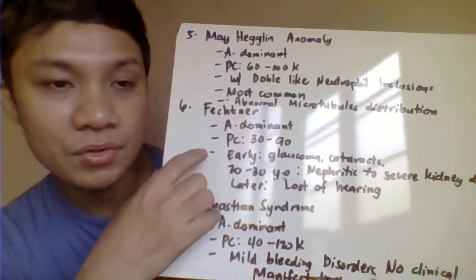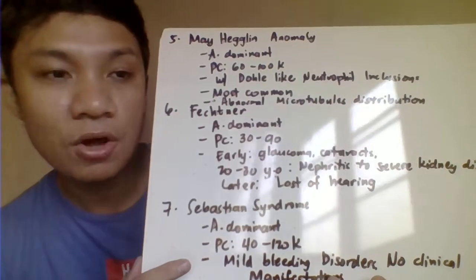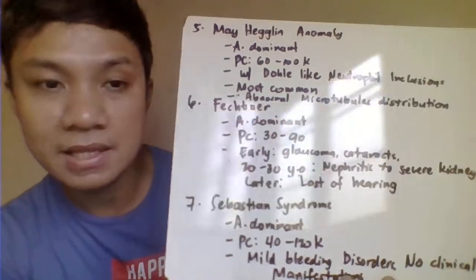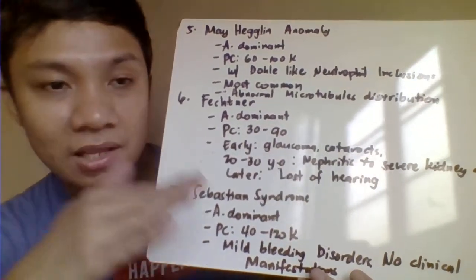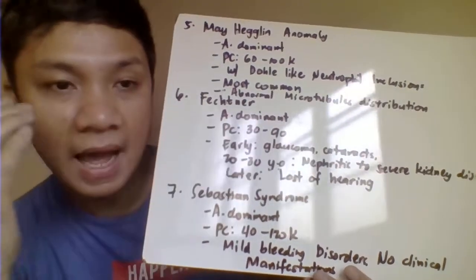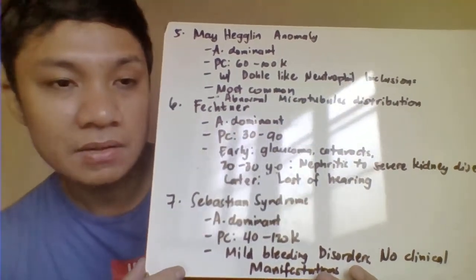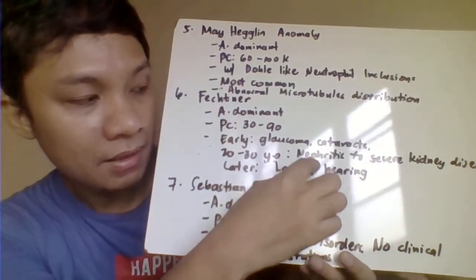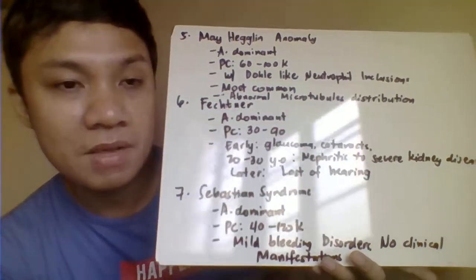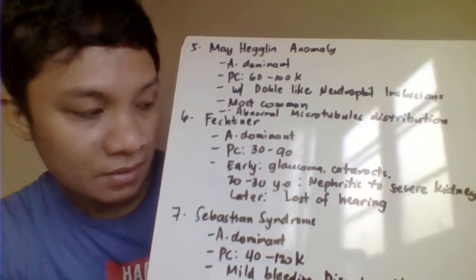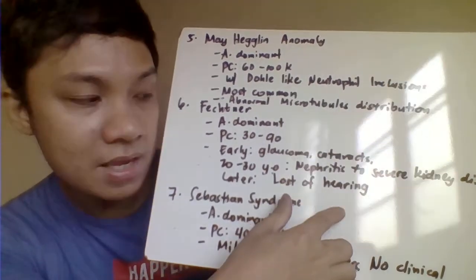Next is Fechner's syndrome, inherited as autosomal dominant with a platelet count of 30 to 90,000. Fechner's manifests three disorders: at an early stage, the patient has eye defects in the form of glaucoma and cataract formation. When the patient reaches age 20 to 30 years old, kidney problems — nephritis — eventually progress to severe kidney disease. Later, the patient develops hearing defects resulting in loss of hearing.